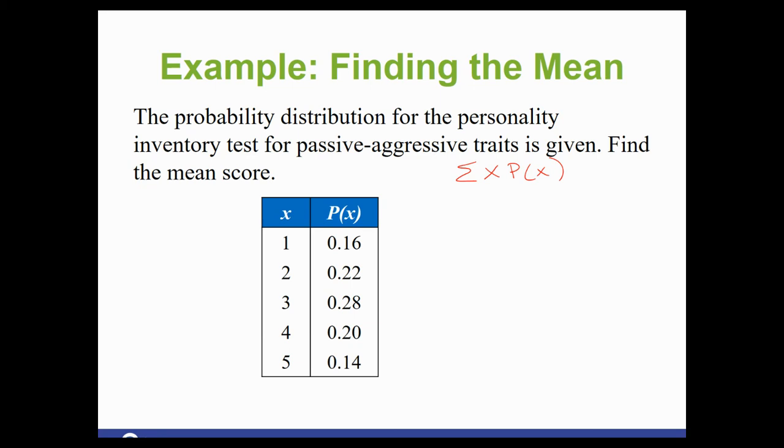So when I have this written out in front of me, I like to kind of just do it right next to the chart. So 1 times 0.16 gives me 0.16. 2 times 0.22 gives me 0.44. 3 times 0.28 gives me 0.84. 4 times 0.20 gives me 0.8. And 5 times 0.14 gives me 0.7. So I've done each one of the x times probabilities. Now I'm going to add them up.